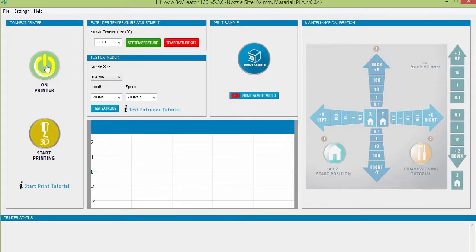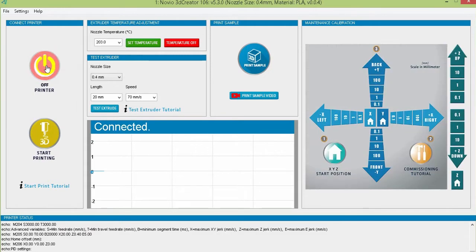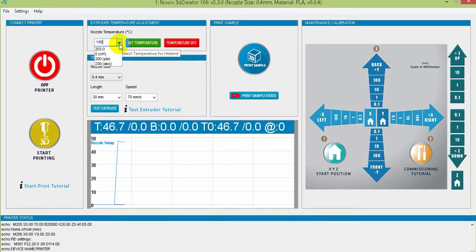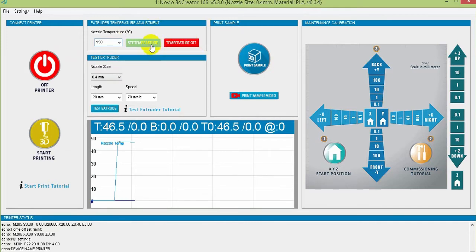Open the 3D Creator software and connect it to the printer. Then set the temperature to 150 degrees and wait until the set temperature is reached.